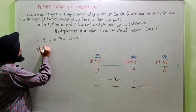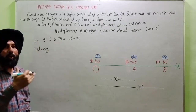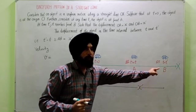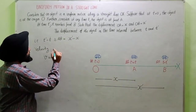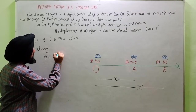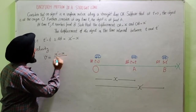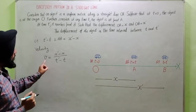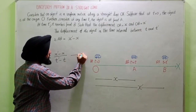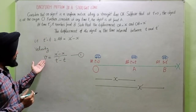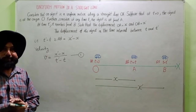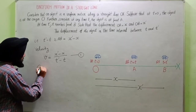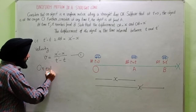Now velocity of the object from A to B. We have to find that: velocity equals x-dash minus x over t-dash minus t. Now consider this as equation 1. We already know velocity is displacement over time. Now, on expanding equation 1: